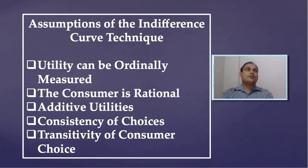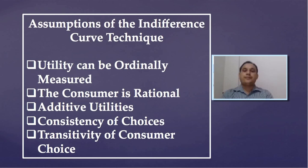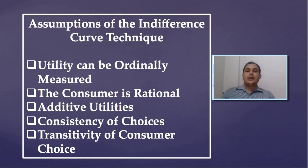The first assumption is that utility can be measured ordinally. As already mentioned, the ordinal approach rejects the concept of cardinal utility, but holds the view that although utility cannot be measured cardinally, it is possible to measure utility ordinally.